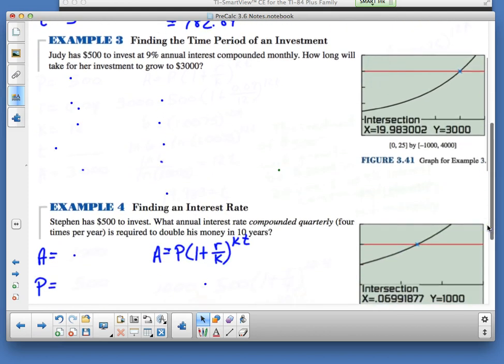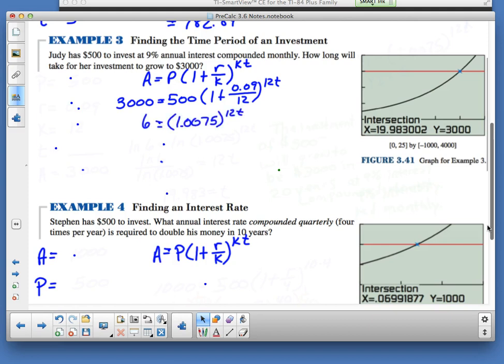Finding the time period of investment. This is where log, natural log stuff comes from. If I'm trying to get the time period of an actual investment, Judy has $500 to invest at 9% annual interest compounded monthly. How long will it take her investment to grow to $3,000? I got my A at $3,000. I know what my initial P is, my principal is $500. I've got $500, $3,000 at 9%, 12 times a year. I condense it down and I get to there.